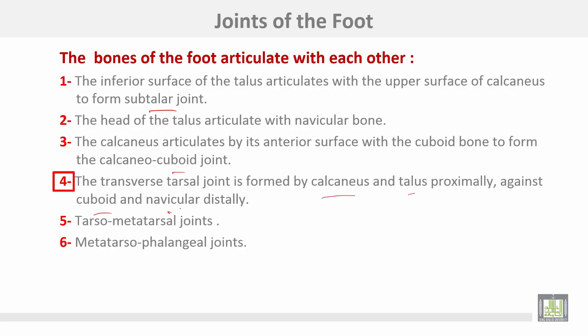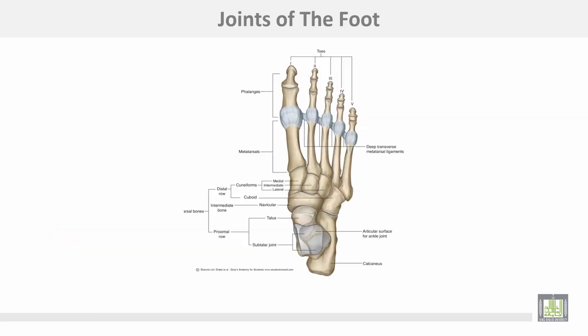The transverse tarsal joint is formed by the calcaneus and talus proximally, and the cuboid and navicular bones distally. Then the tarsometatarsal joints, then the metatarsophalangeal joints. Shown here are the joints between the talus and navicular bone and between the calcaneus and cuboid, the three cuneiforms, the tarsometatarsal joints, and the metatarsophalangeal joints.